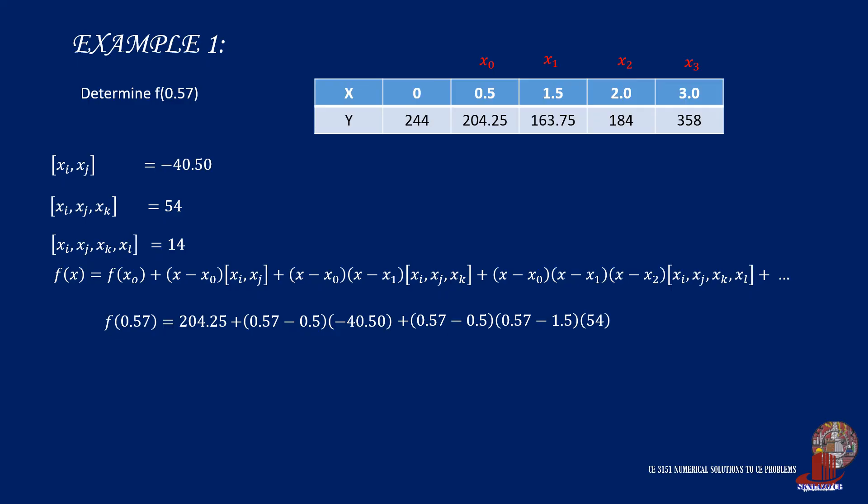Now the last term is 0.57 minus 0.5, times 0.57 less 1.5, and multiply this with 0.57 minus 0.2, then multiply the leading difference of 14. f of 0.57 stays the same as 199.2029.